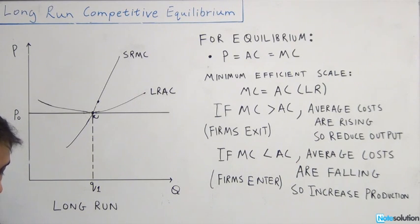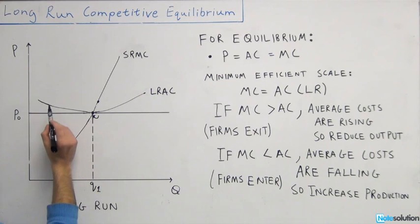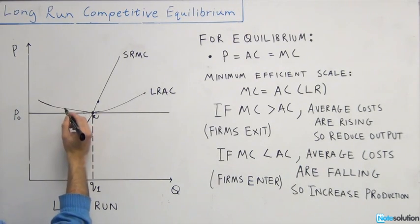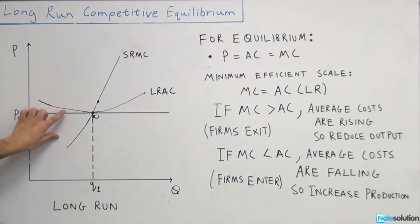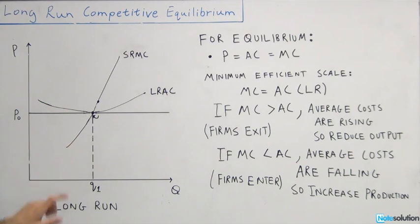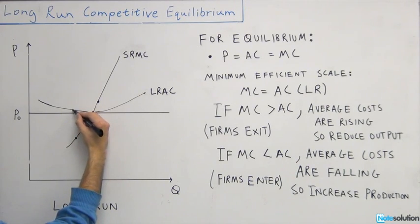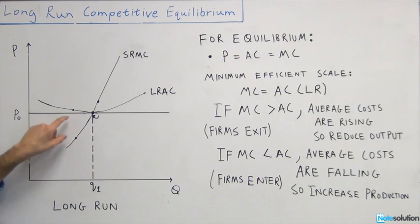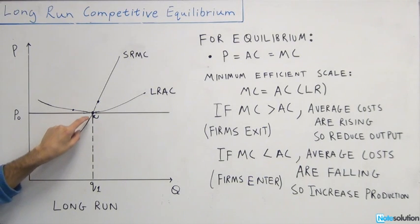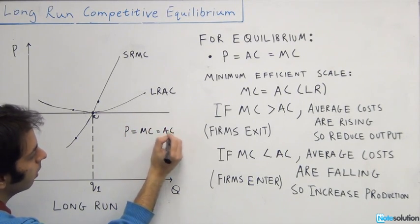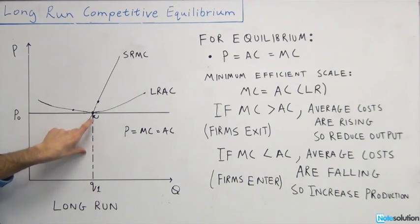The next option says average total cost exceeds the price of the good. Any point other than the tangent equilibrium point is a point where average cost exceeds price. For example, at a point to the left of equilibrium, the average cost is greater than price but marginal cost is much lower than price, meaning the cost of producing that last unit is much less than the price you're getting for it. So you should increase production, moving toward the equilibrium point where your average cost decreases and marginal cost increases.